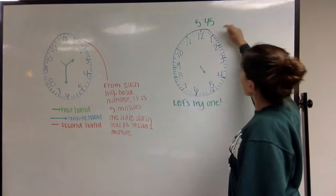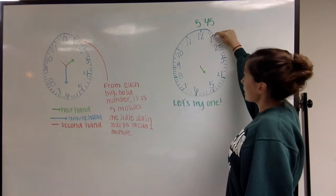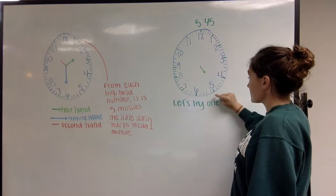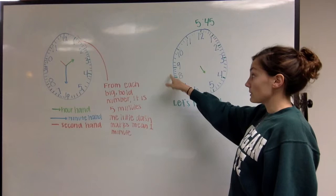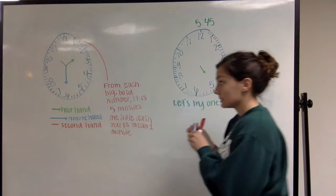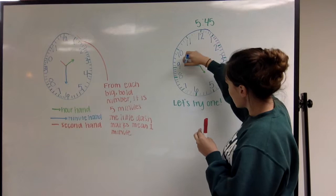45 is the minute, as I said. So you start at the one, which is five minutes, 10 minutes, 15 minutes, 20 minutes, 25 minutes, 30 minutes, 35 minutes, 40 minutes, 45 minutes. So you would take the blue marker for the minute hand and draw a long line from the middle all the way to the nine because that's where 45 minutes is.